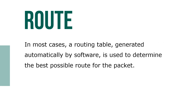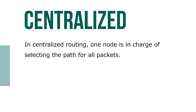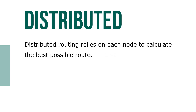In most cases, a routing table generated automatically by software is used to determine the best possible route for the packet. In centralized routing, one node is in charge of selecting the path for all packets. Distributed routing relies on each node to calculate the best possible route.